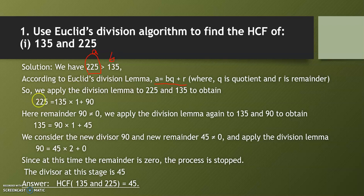So what you have to do is divide 225 by 135. When you divide 225 by 135, you get the quotient as 1 and the remainder as 90.